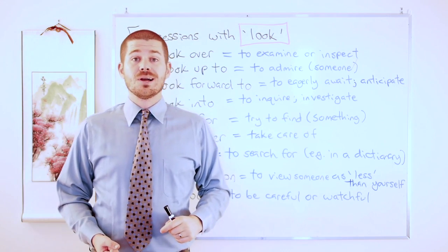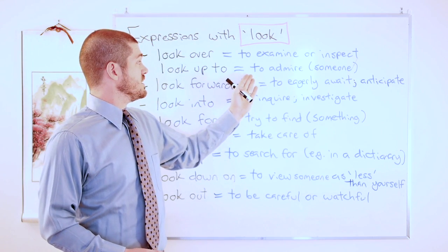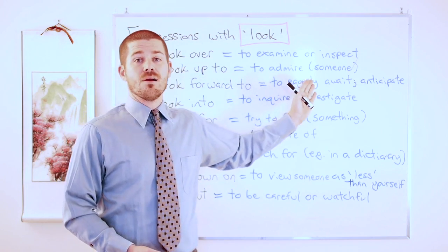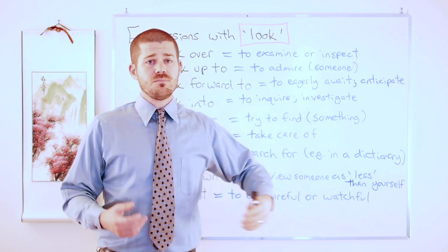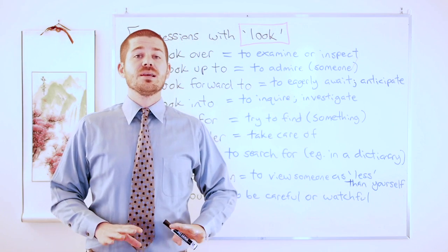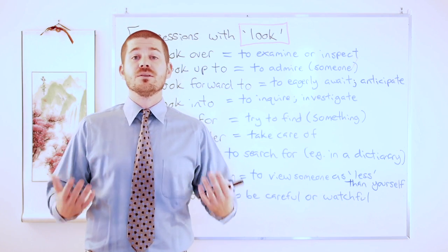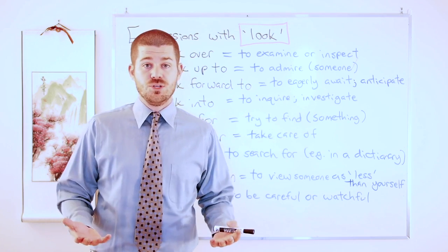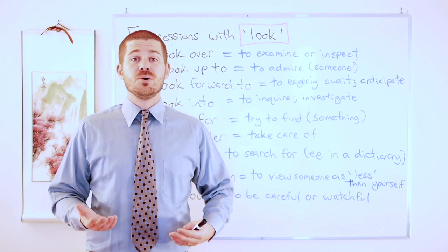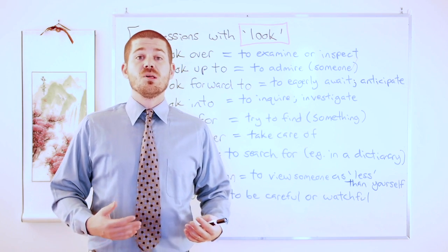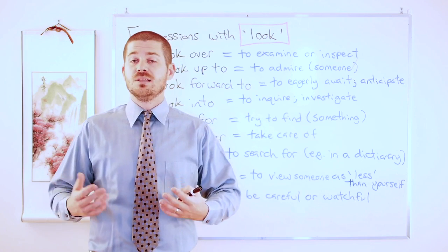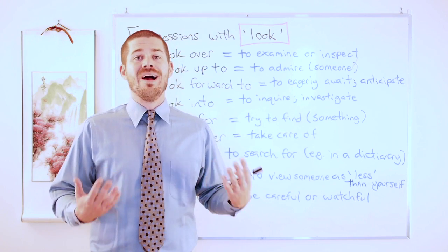Next one, look up to. We can see the definition to admire someone. For example, young kids usually look up to their parents or their teachers or their coaches. A lot of people, especially young people, look up to musicians or athletes or actors.